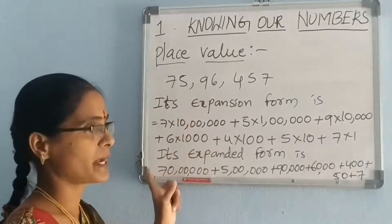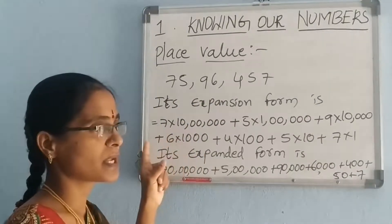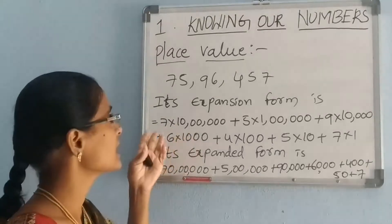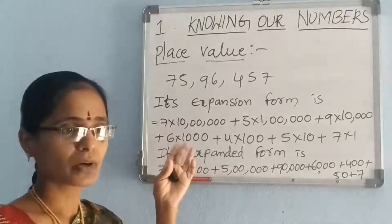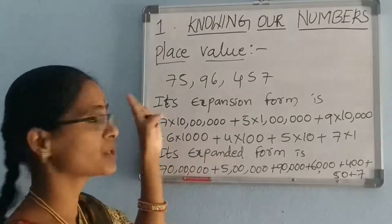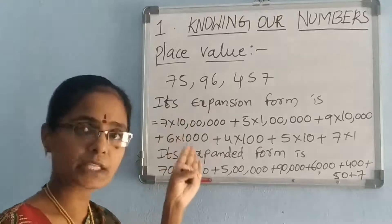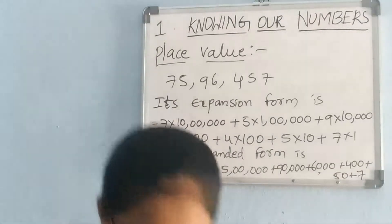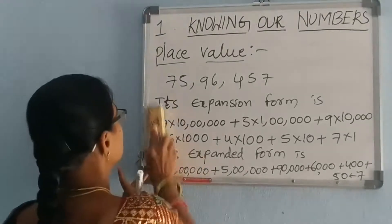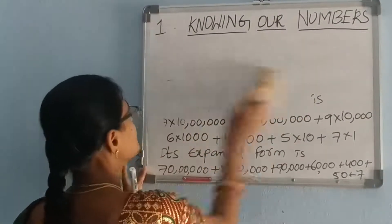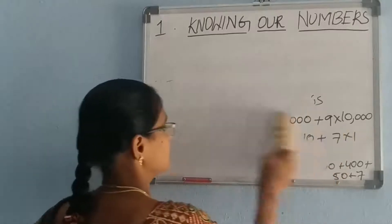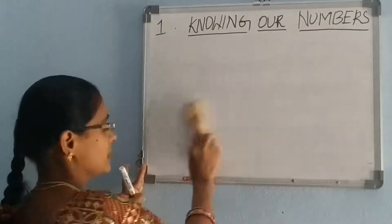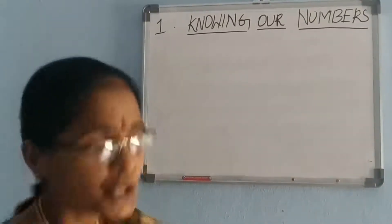Similarly, you have to do 6-digit, 7-digit, 8-digit, and 9-digit larger numbers like this. Place value, expansion form, and expanded form. Now we will go to the next topic: use of commas.